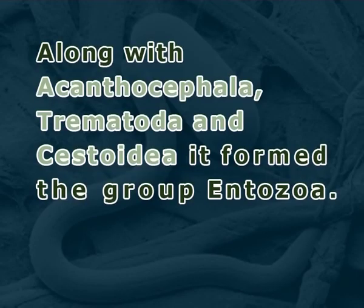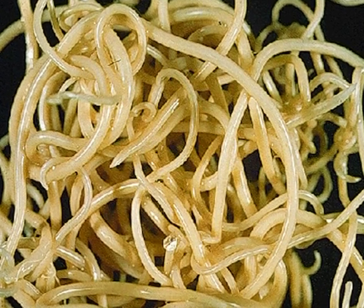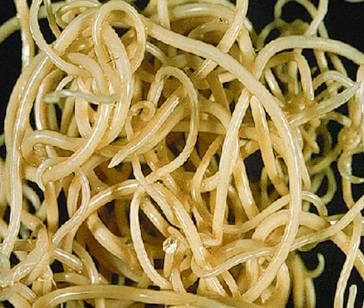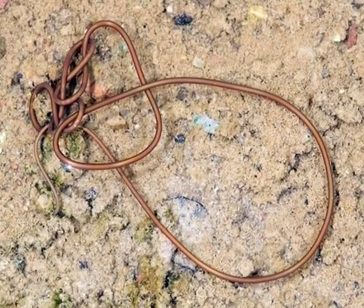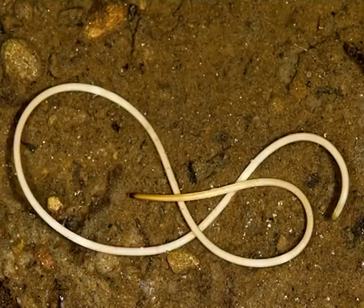Turning to taxonomy and systematics: at its origin, Nematoda included both roundworms and horsehair worms. Along with Acanthocephala, Trematoda, and Cestoda, it formed the group Entozoa. The first differentiation of roundworms from horsehair worms, though erroneous, is due to Siebold in 1843, with orders Nematoda and Gordacea.